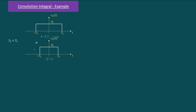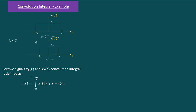For any two signals x1(t) and x2(t), we define the convolution integral as y(t) = integral from minus infinity to infinity of x1(τ) · x2(t − τ) dτ. Since the given integral is with respect to τ, the first step is to convert the given signals into the tau domain.